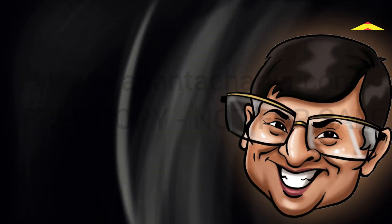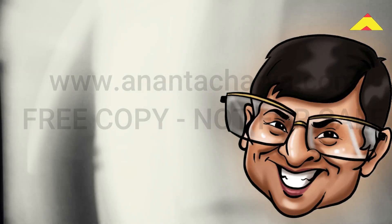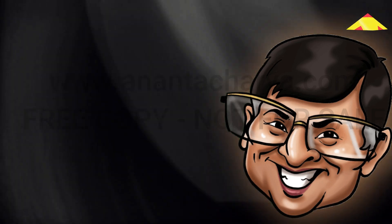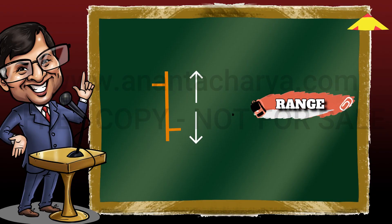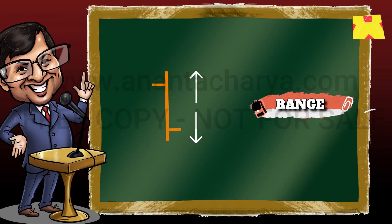Let us now look at individual bars to check the price action and understand the mood of the participants in the markets. The range of a bar is the difference between the high price and the low price.